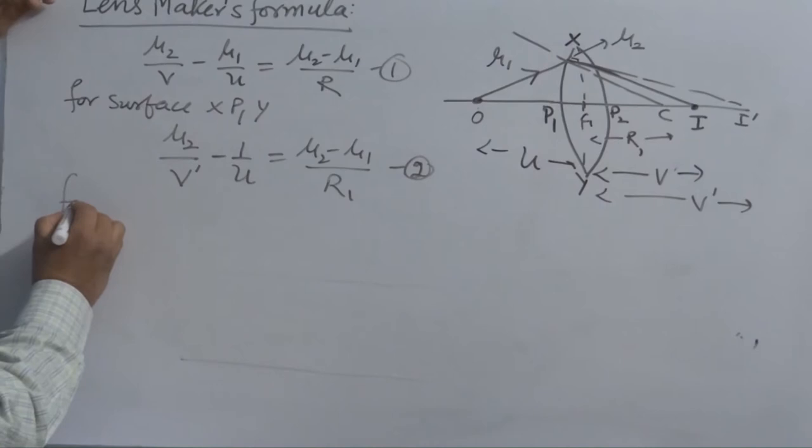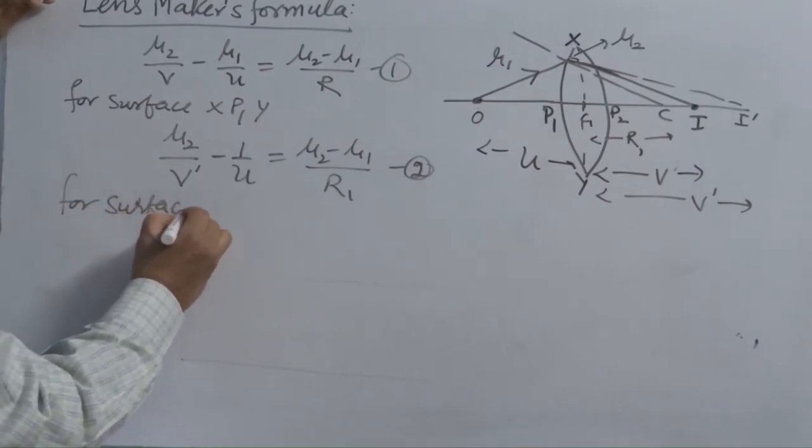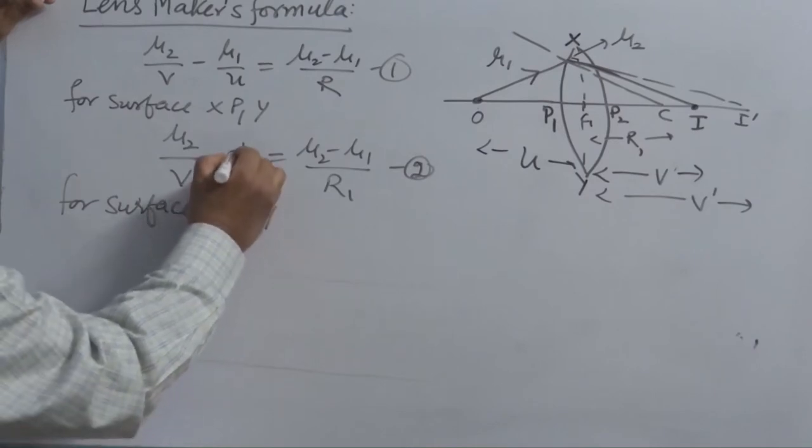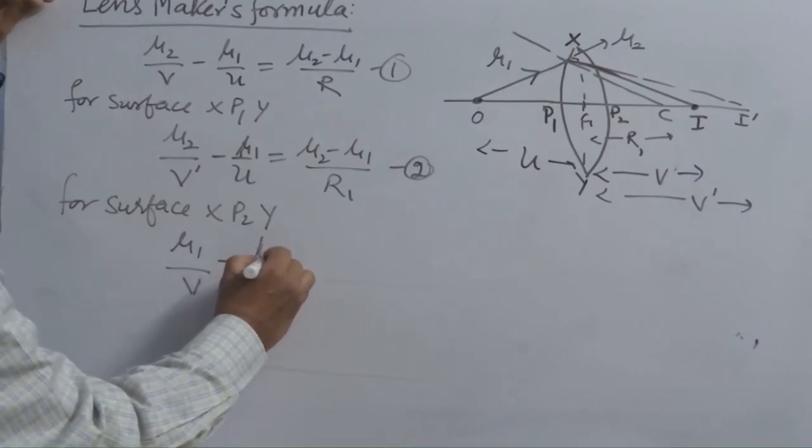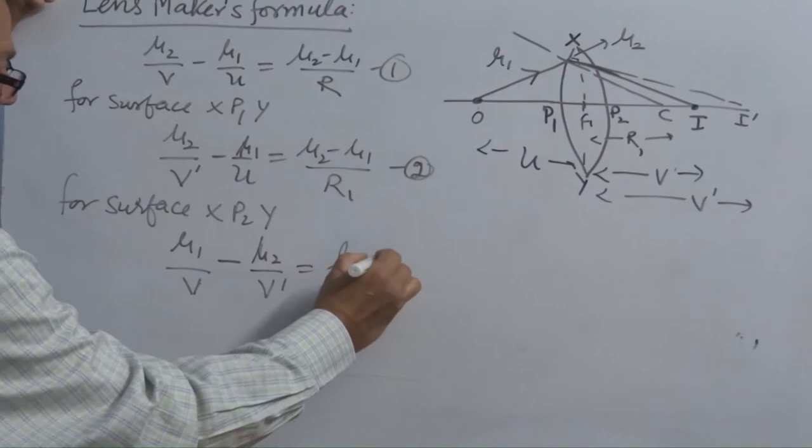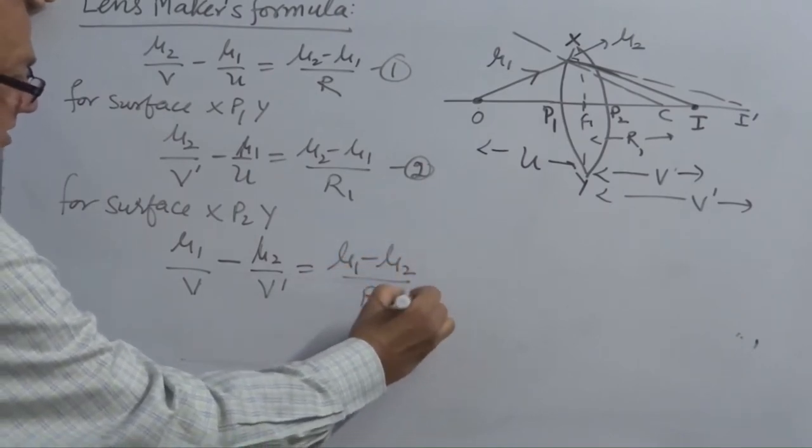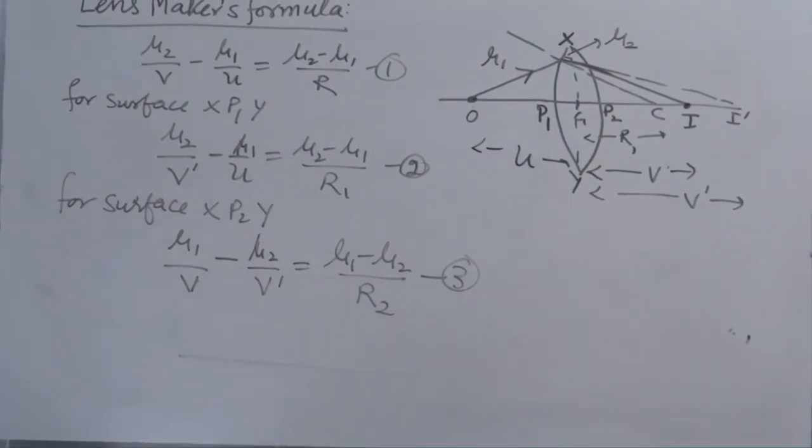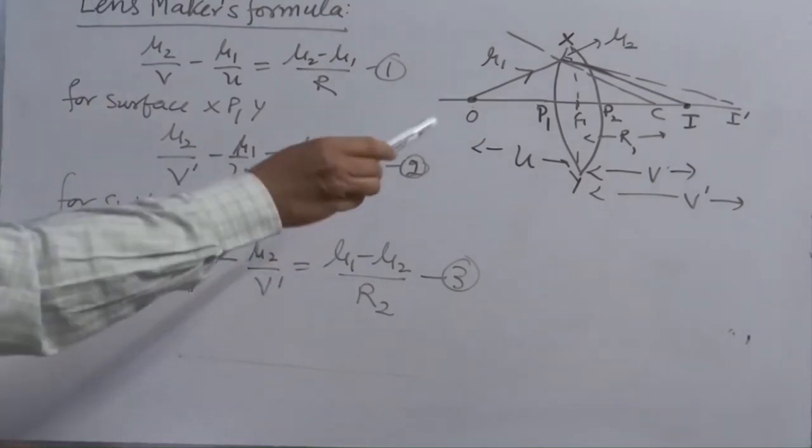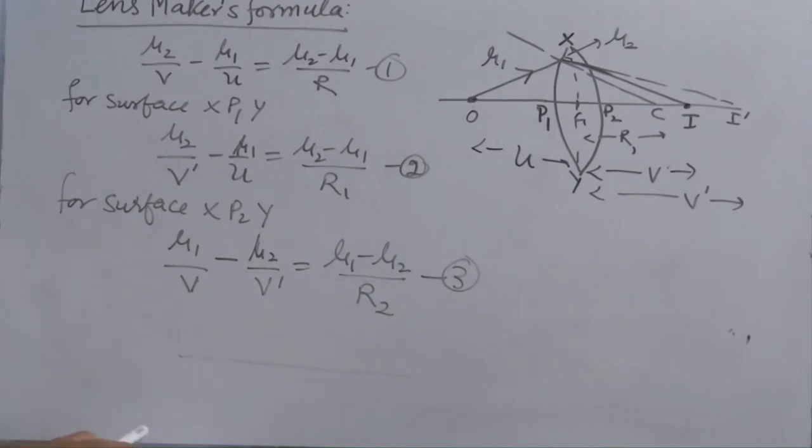And for surface X, P2, Y, this is mu1. You can write mu1 over V minus mu2 over V dash is equal to mu1 minus mu2 over R2. In the second equation, you can see, I have interchanged mu1 and mu2. Mu1 by mu2 and mu2 by mu1. Of course, for second half, V dash acts as an object. So, I kept V dash there.